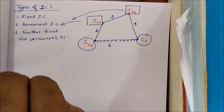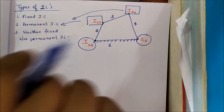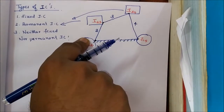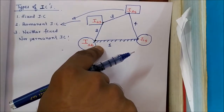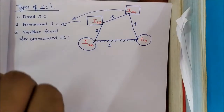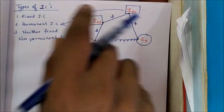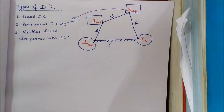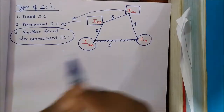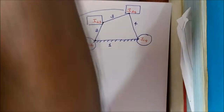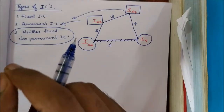The same thing is formed by the joint of two links. If one of the links in a joint is fixed, then the same thing is fixed. The same thing is fixed by the joint.